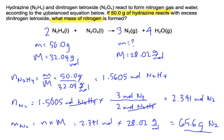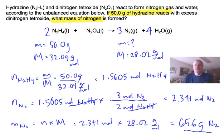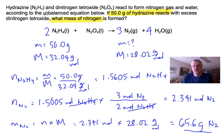And there is the answer. That's the straightforward process for going from the mass of a known — in this case hydrazine — to the mass of an unknown — in this case nitrogen — using your balanced equation, molar masses, and equation factors. That's the mole method, and that concludes this video.